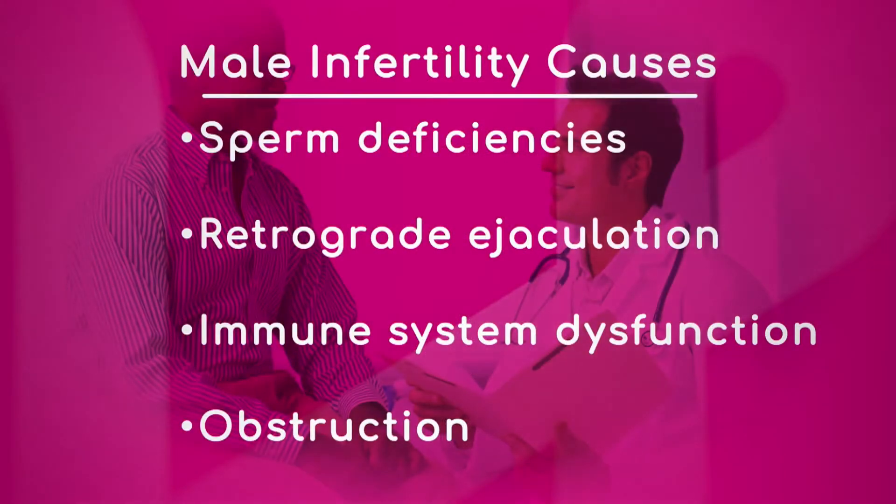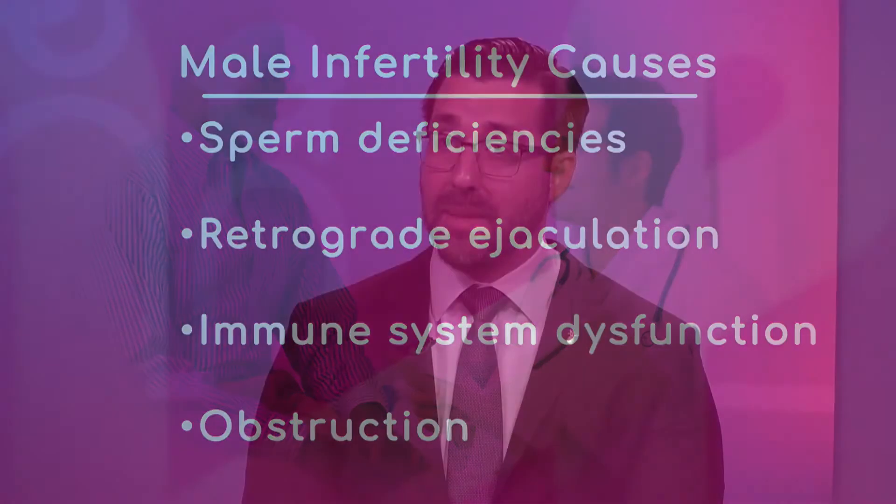Are any of these more common than others — which do you frequently see? You'll see a combination of everything. We'll see certain genetic abnormalities, men who've had surgeries, men who've taken certain medications — whether it be steroids or drug use — and certain immunologic abnormalities as well. We'll also see obstruction. The most common type of male infertility obstruction is actually a vasectomy — if a man gets a vasectomy, they're infertile because of a surgically caused obstruction, and that was on purpose.